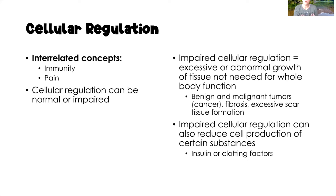Much like all of the core concepts discussed so far in this series, cellular regulation can either be normal or impaired. Impaired cellular regulation is where we have excessive or abnormal growth of tissues that are not needed for body function. Some examples would be benign and malignant tumors — malignant tumors being cancerous — as well as fibrosis or excessive scar tissue formation.